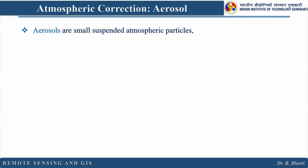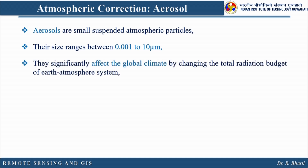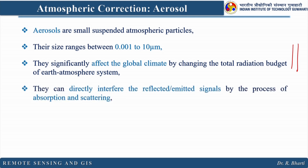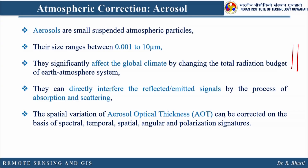Aerosols are small suspended atmospheric particles, with size ranging between 0.001 to 10 micrometers. They significantly affect global climate by changing the total radiation budget of the earth-atmosphere system. They can directly interfere with reflected or emitted signals through absorption and scattering. The spatial variation of aerosol optical thickness (AOT) can be corrected based on spectral, temporal, spatial, angular, and polarization signatures measured from remote sensing.